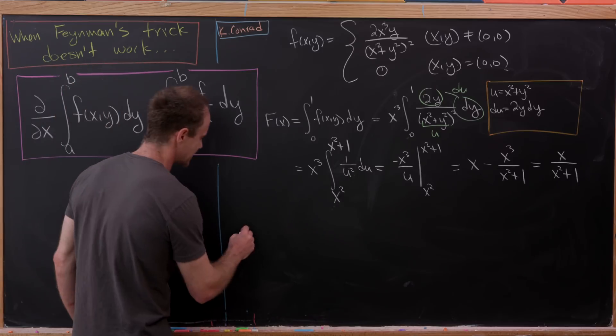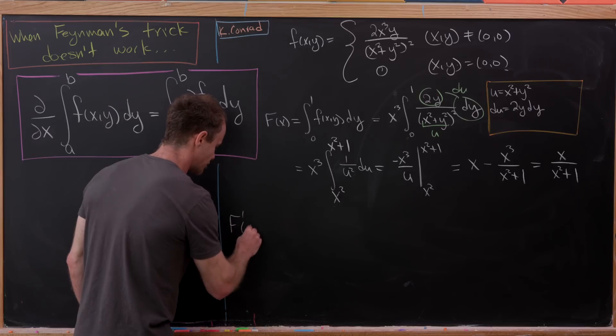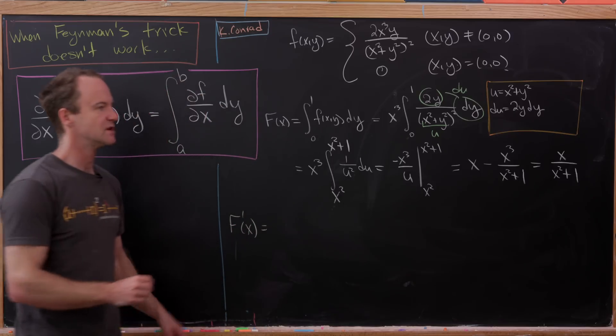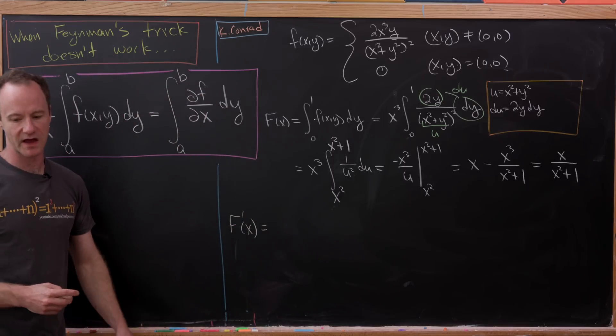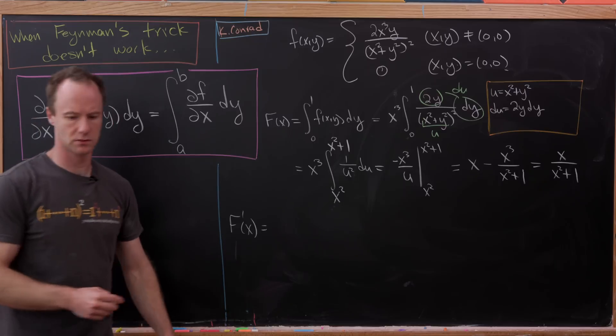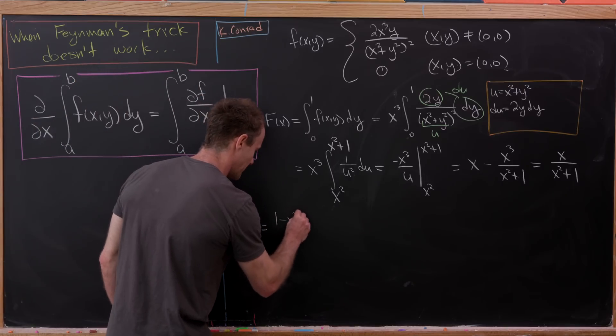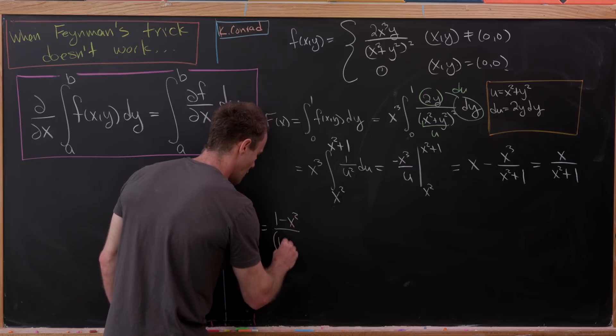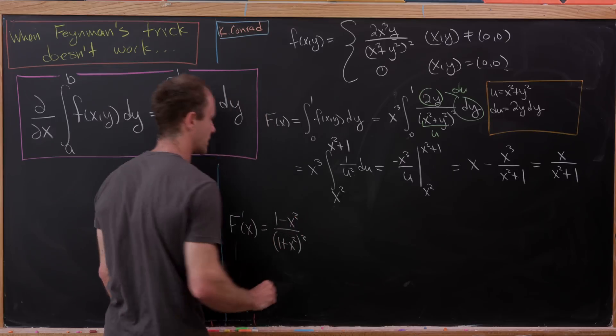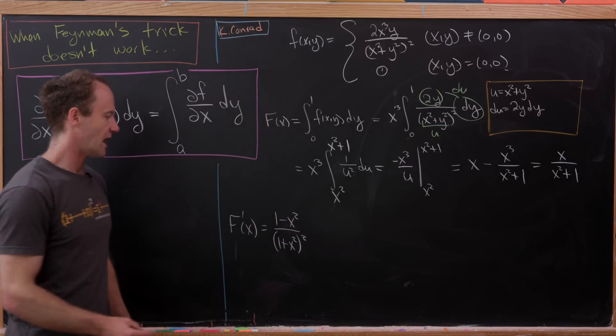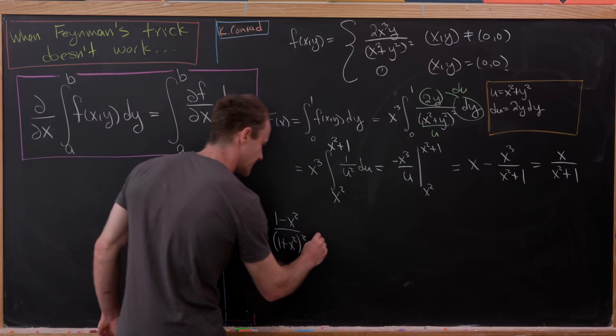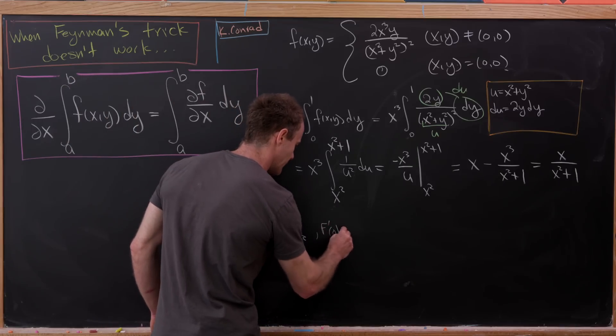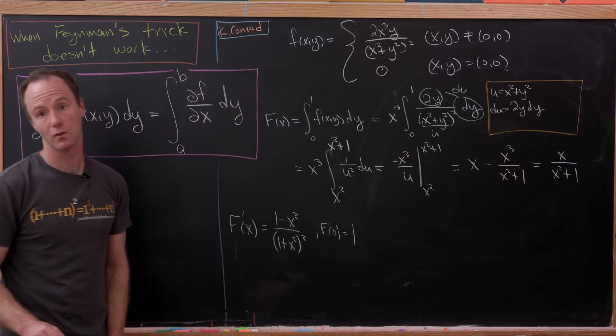So that's my function F of x. But now we really want our function F prime. So we can take the derivative using the quotient rule, and what you'll find is it has this nice shape: 1 minus x squared over 1 plus x squared squared. And then let's notice that F prime evaluated at 0 is simply the number 1.